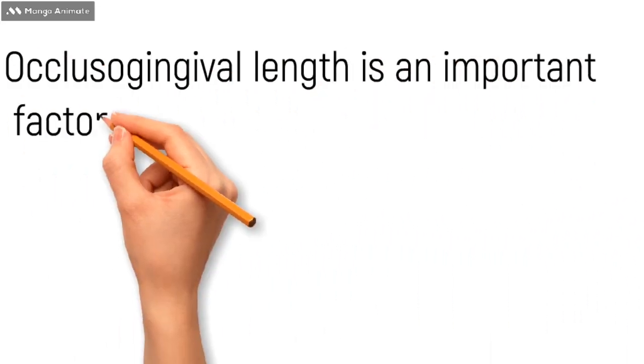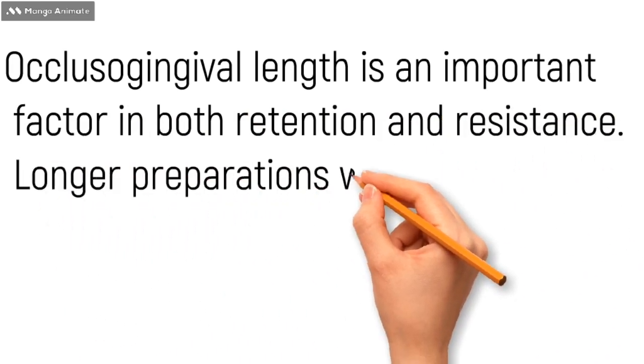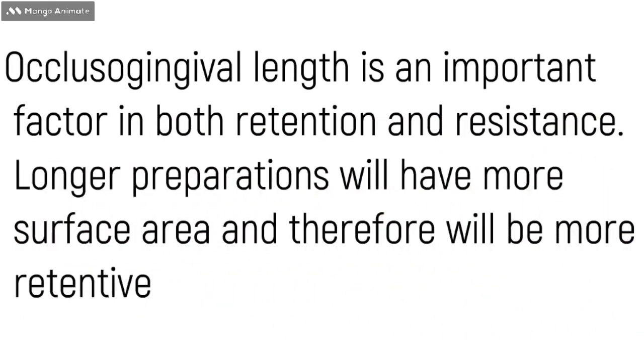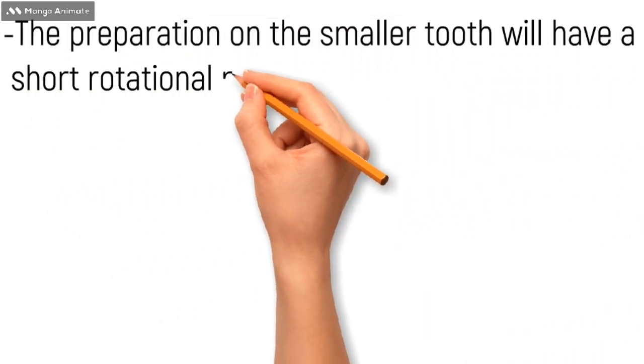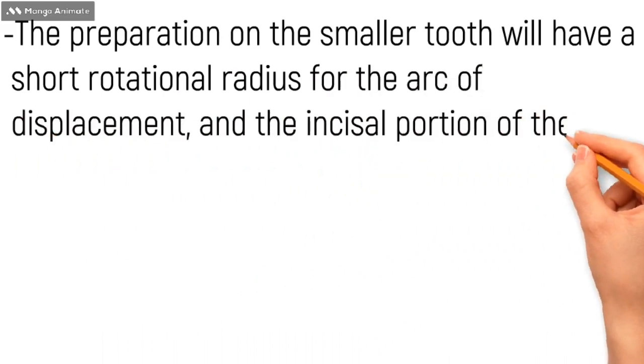The next factor for retention and resistance is length. The occlusal-gingival length is an important factor in both retention and resistance. The longer preparations will have more surface area and therefore will be more retentive. In this figure, the length of walls of restoration A is much more than the restoration walls shown in B, which is why the restoration in B cannot resist the tipping forces because of its shorter length. But if the preparation is on a smaller tooth, it will of course have a shorter rotational radius of displacement and the incisal portion will resist the displacement.